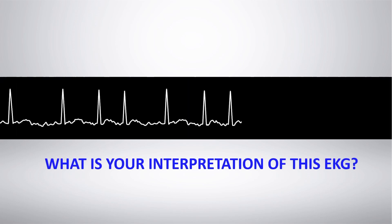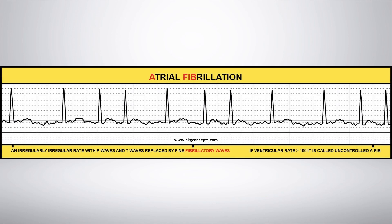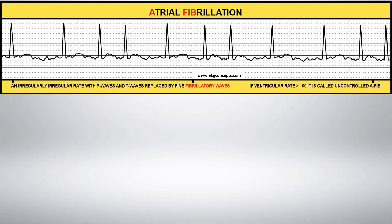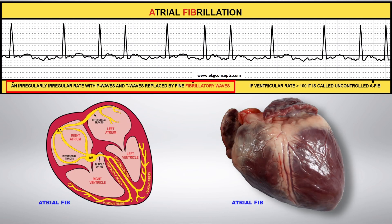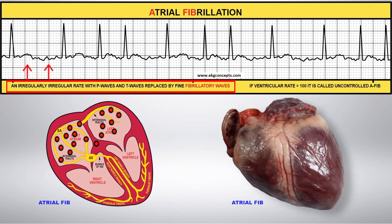What is your interpretation of this EKG rhythm strip? Atrial Fibrillation. Atrial Fib is multiple impulses originating in the atrium in places other than the SA node, at a rate of up to 400 to 600 beats per minute.